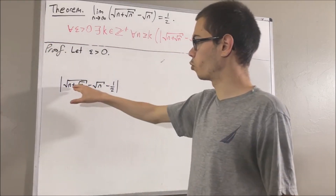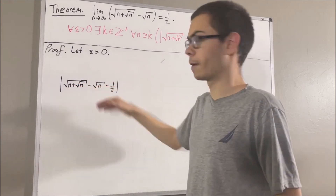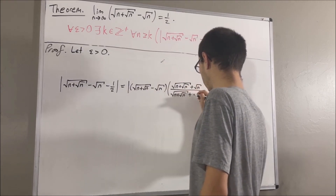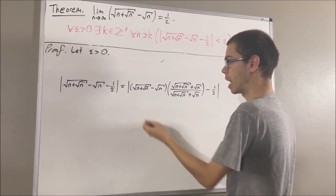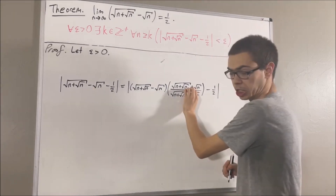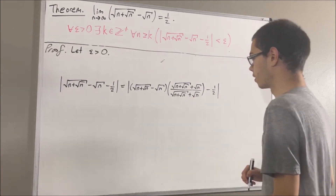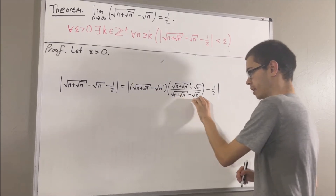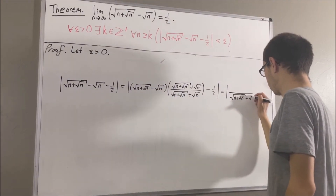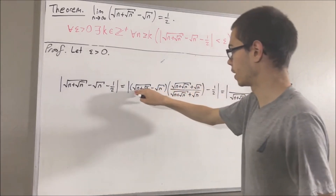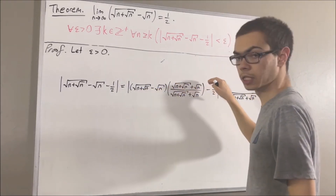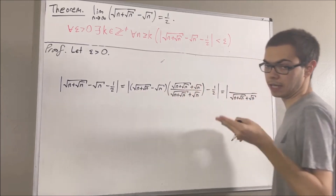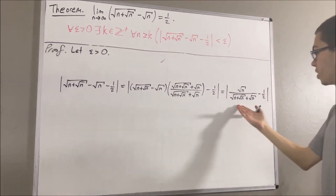First, I'm actually going to re-express this expression in a different way. I'm going to take this and multiply it by the conjugate divided by its conjugate. If we do that, multiplying these two together, the denominator will be precisely this expression. And in the numerator, we're really multiplying this by its conjugate, and that will leave us with n plus square root of n minus n, which simplifies down to square root of n. So this is what we get.